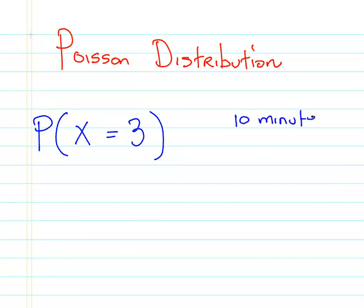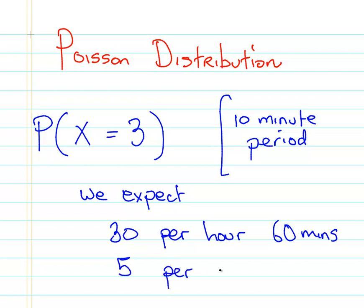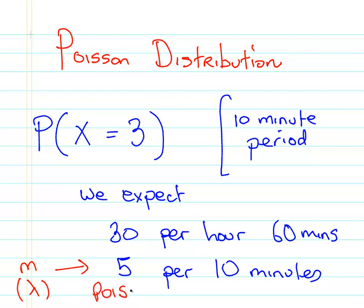We have to be very careful here. In a ten-minute period, what's the probability of three calls? We expect 30 per hour, which is 60 minutes. So 30 per hour is equivalent to five per every ten minutes. The Poisson mean — also denoted as lambda, though I'll stick with m to be consistent with the tables I'm using — is five. So m is equal to five.